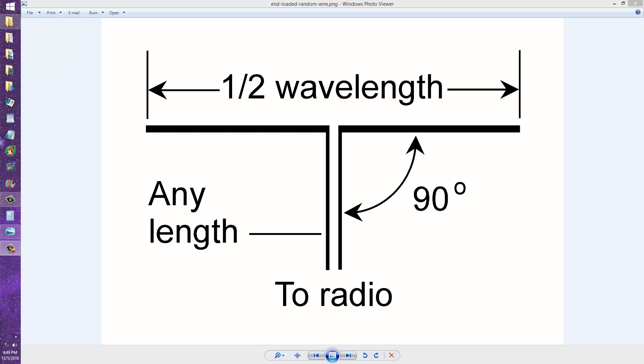I thought of an idea for taking a dipole antenna and turning it into an end-loaded random wire antenna. Now this is just your basic dipole antenna, one-half wavelength long, fed at the center with a two-wire transmission line.